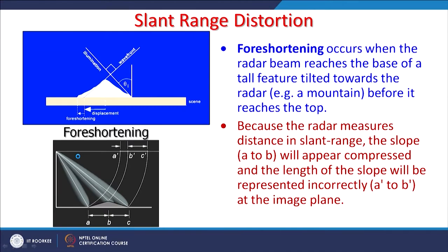Two slant range distortions are foreshortening and layover. Foreshortening occurs when the radar beam reaches the base of a mountain or tall feature — the result is that it appears tilted towards the radar or sensor. The best example is in the case of a mountain situation. This kind of displacement makes the feature appear short in size or length rather than the real thing. For example, this part will get a very small registration in the image, only up to a certain extent.